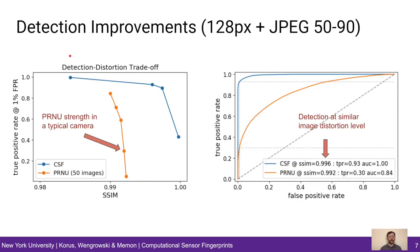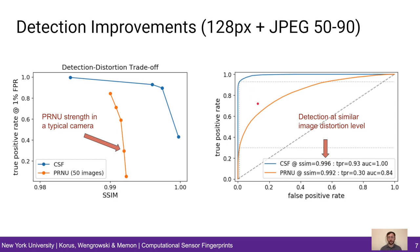We summarize our key results as follows. We focus on challenging conditions with small image blocks and lossy JPEG compression. On the left-hand side, you can see the detection-distortion trade-off, and you can clearly see that computational fingerprints deliver much better detection performance and maintain higher image fidelity. On the right-hand side, we compare ROC curves for a similar SSIM level. Again, you can see that computational fingerprints deliver much better performance.